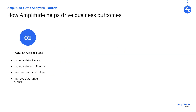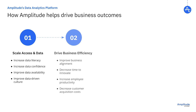Amplitude has four major ways that it can help you drive your business outcomes. The most obvious way is to scale data access and insight within your company, by making data available, reliable, and self-service. This increased data availability and literacy will help drive cross-functional efficiency and innovation.